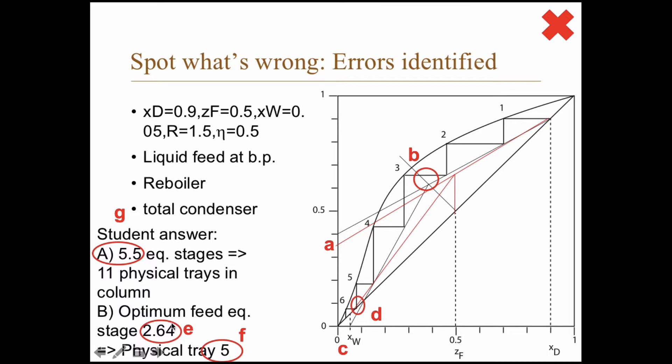And there is another problem here. 2 times 64, if you divide that with the overall tray efficiency 0.5, you get more than 5. Then you should round that up to the nearest integer and that would be 6, not 5.